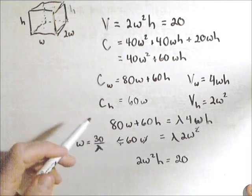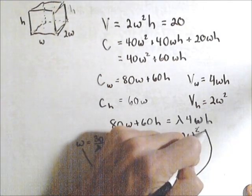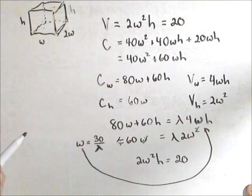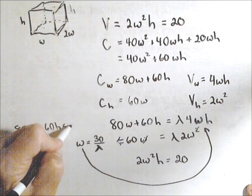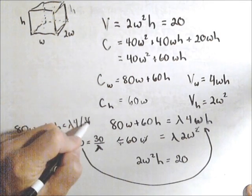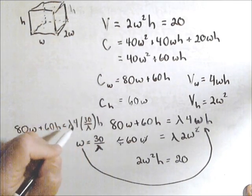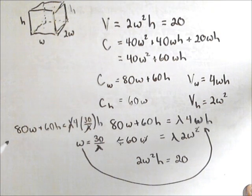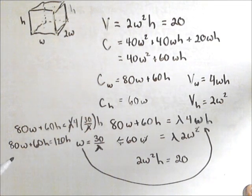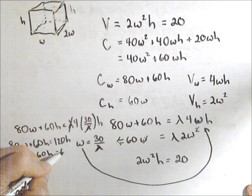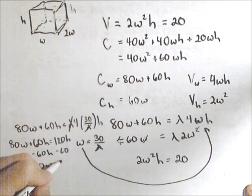That might be useful, because what I can do is I can sub that W in for this one, and I'm going to be able to get rid of lambda. So let's see what happens when I do that. I've got 80W plus, I'm going to leave the W in this one, equals lambda 4 times 30 over lambda times H. So the lambdas cancel, and I end up with 80W plus 60H equals 4 times 30 is 120H. Subtract the 60H off of both sides, and I get 80W equals 60H.